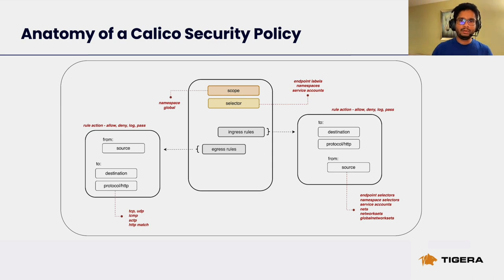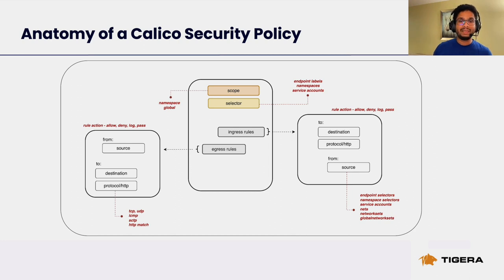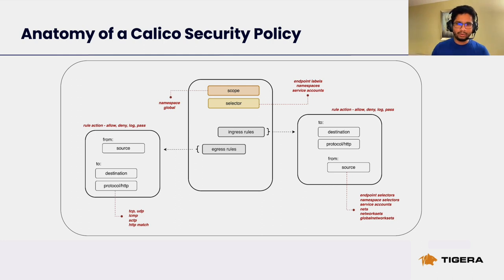Let's have a look at the anatomy of a Calico security policy. A security policy has a scope — it could either be a namespace-scoped policy which applies to a specific namespace, or a global network policy which could apply to multiple namespaces or even all workload endpoints in the cluster. There are a few selector options: you could use endpoint labels to select specific workload endpoints. For global network policies, you can also use a namespace selector to limit the policy to specific namespaces, or service accounts as selectors. A policy will have one or more ingress and/or egress rules, each with an allow, deny, log, or pass action.